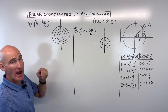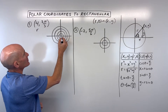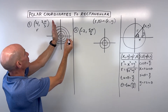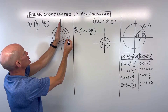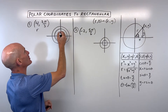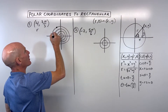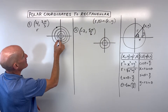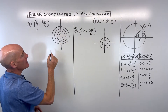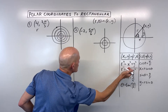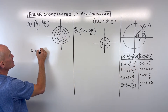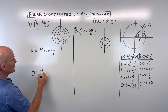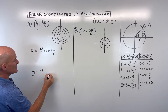So (4, 2π/3) — that's our radius 4. We go out 1, 2, 3, 4 — a circle with radius 4. We rotate counterclockwise because this is a positive angle, 2 thirds of pi, which puts us right about there. What we want to do now is figure out how to get to the same point by going left and right, up or down — x, y form. So we've got x equals the radius 4 times cosine of the angle, and y equals 4 times sine of the angle.